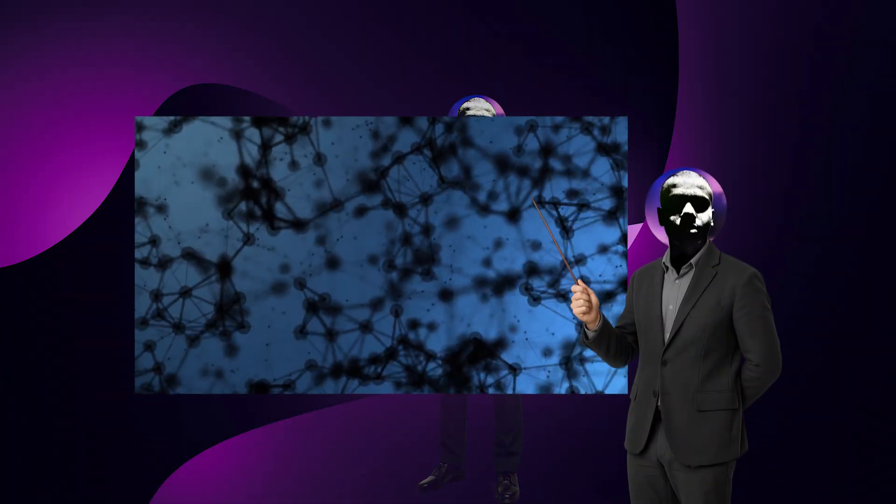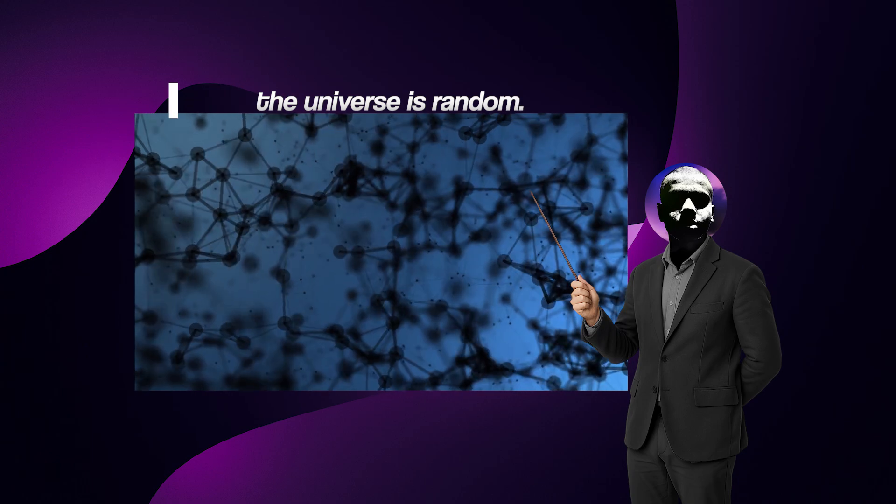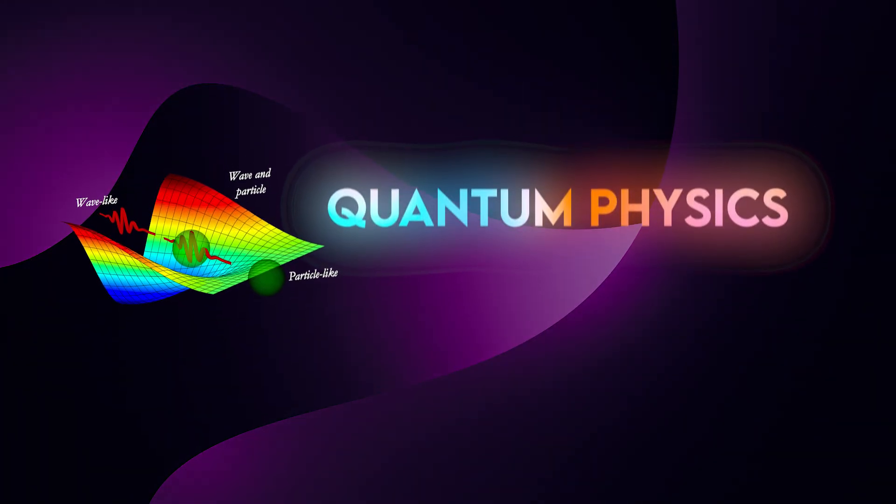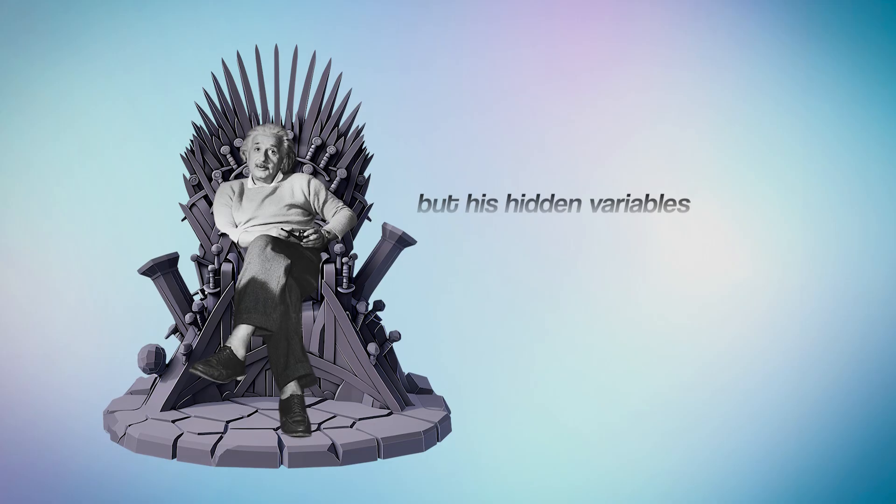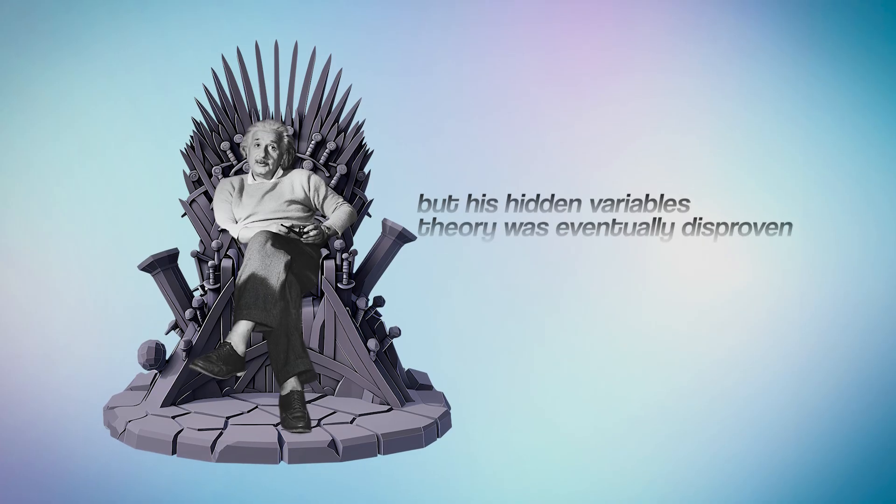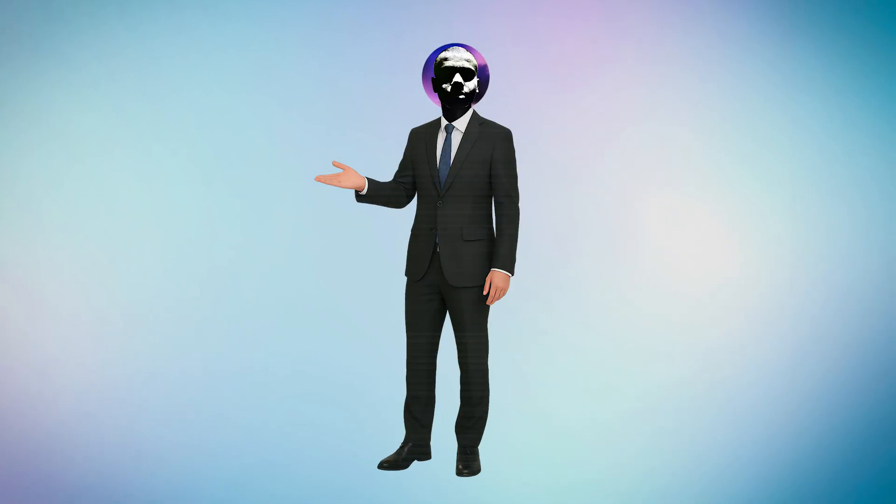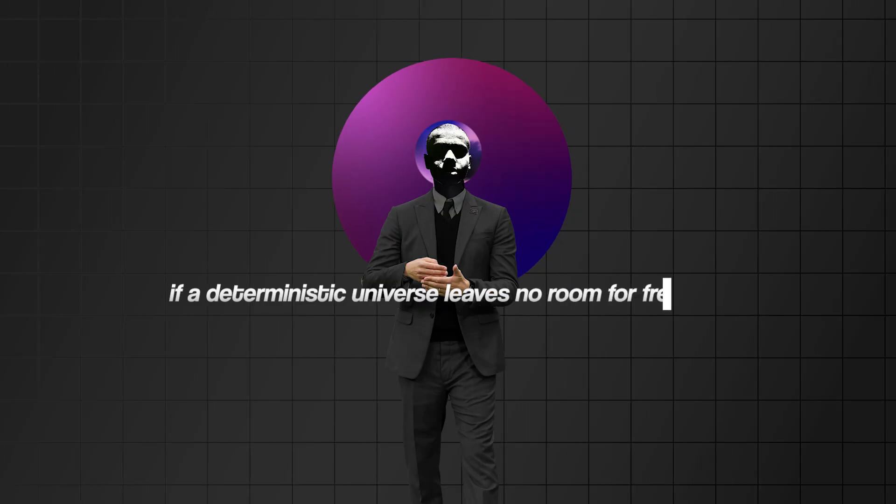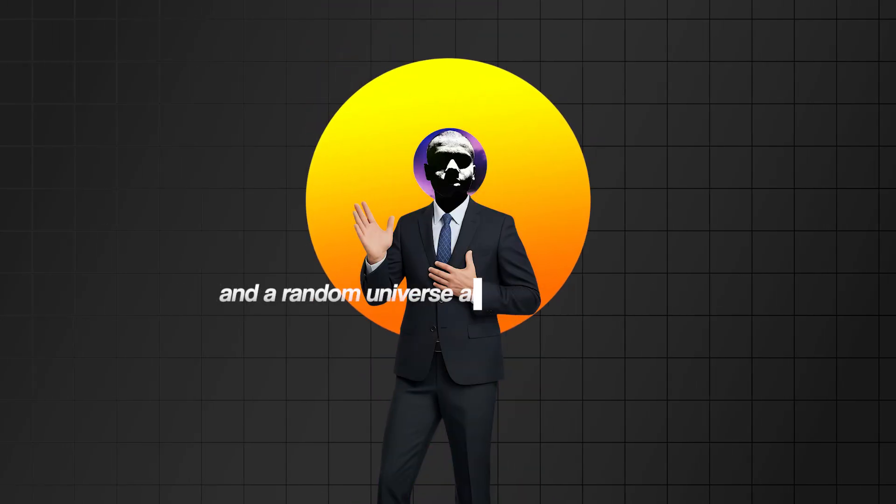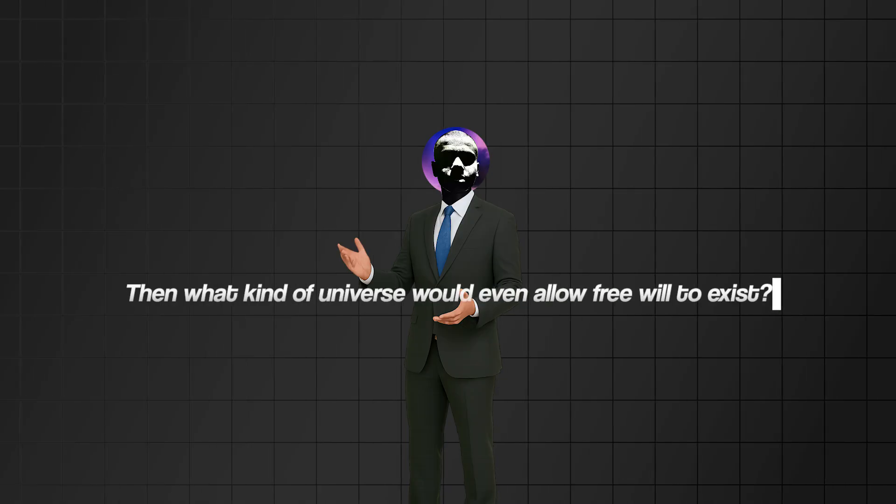So to sum it all up, our current understanding of physics suggests that at the most fundamental level, the universe is random. The discovery of quantum mechanics shattered the old belief in a fully deterministic reality. Einstein tried to reconcile this, but his hidden variables theory was eventually disproven. And we still haven't been able to unite the classical and quantum worlds. So until then, the trophy goes to randomness. But here's the troubling part. If a deterministic universe leaves no room for freedom and a random universe also lacks true agency, then what kind of universe would allow free will to exist?